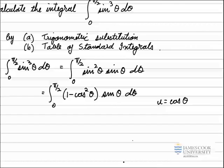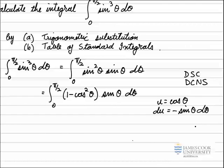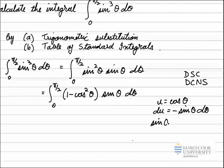Over to the side, I make that substitution: let u equal cos theta. Whenever I make a substitution, we differentiate. Remembering: the derivative of sine is cos, and the derivative of cos is negative sine. So du/dθ equals negative sine theta, and I can write that as du equals negative sine theta d theta. In the integral I've got sine theta d theta, so rearranging, sine theta d theta equals negative du.